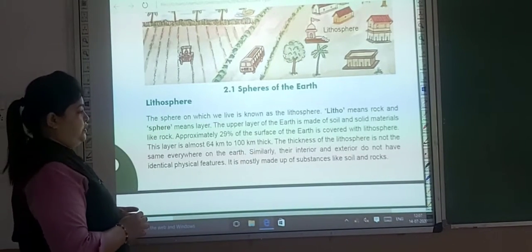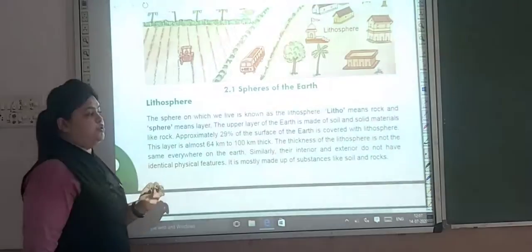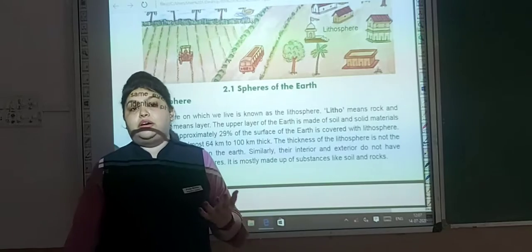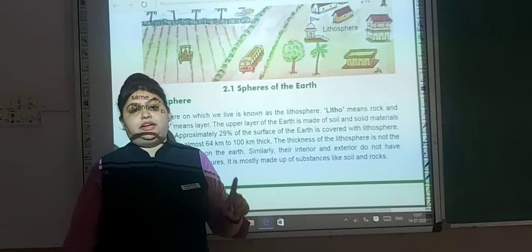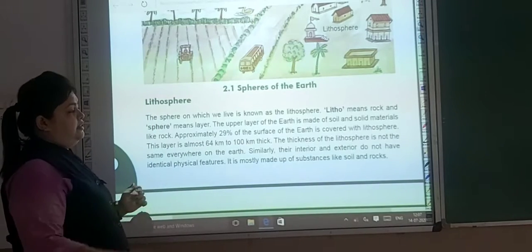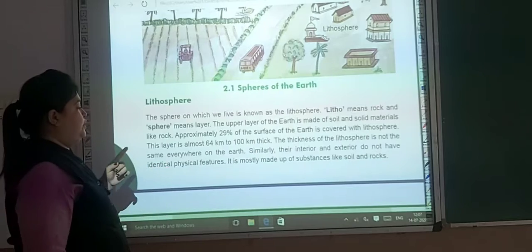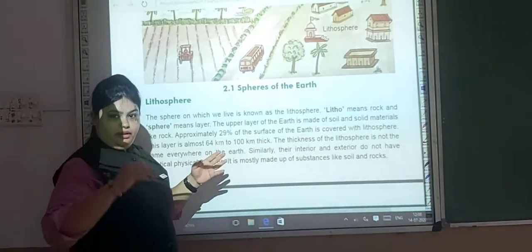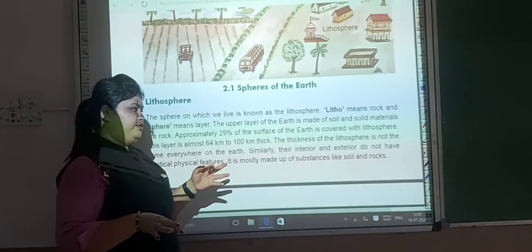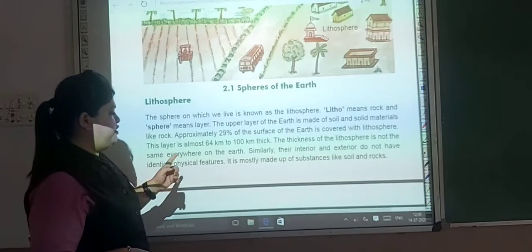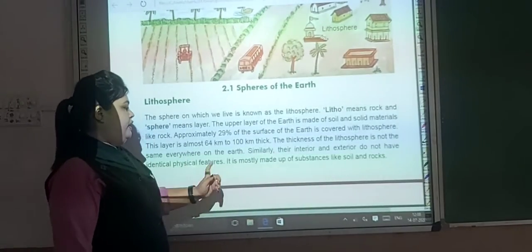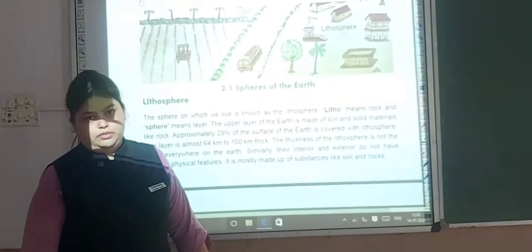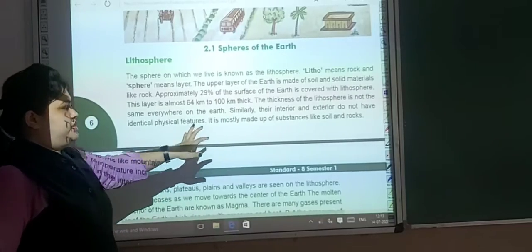The thickness of the lithosphere is not the same everywhere on the earth — at some places it is 64 kilometers thick, at some places it is 100 kilometers. The interior and exterior of the earth do not have identical physical features. It is mostly made up of substrate like soil and rocks.